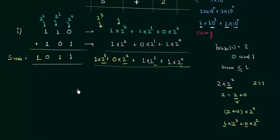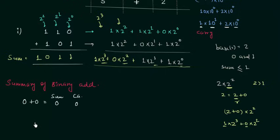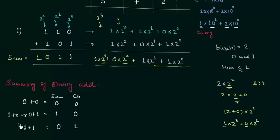This is how you perform binary addition. Summary of binary addition: when you add 0 and 0, sum is 0 and carry is 0. When you add 1 and 0 or 0 and 1, sum is 1 and carry is 0. When you add 1 and 1, sum is 0 and carry is 1. This last case is the most important result of this lecture — 1 plus 1 gives sum equal to 0 and carry equal to 1. If you remember this result you will face no problem in binary addition.